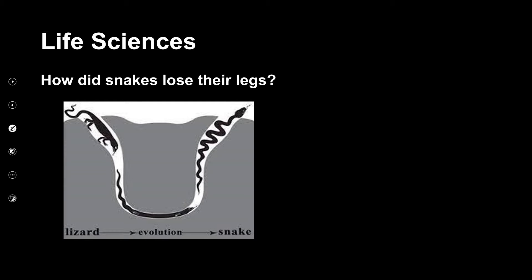According to one of the theorists, Lamarck, he says that snakes were lizard-like creatures. And as they went into burrows, they used their legs to wiggle in the narrow burrow. And that is how they didn't use their legs, so they lost the actual use of the limbs.